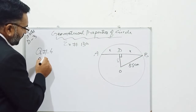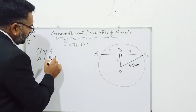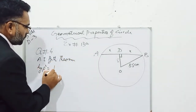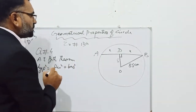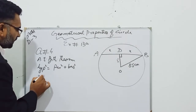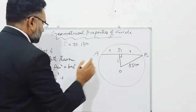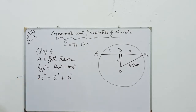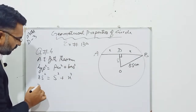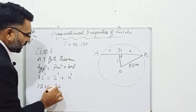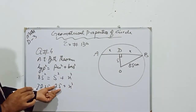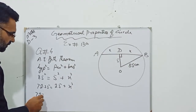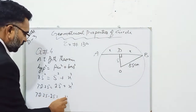According to Pythagoras theorem, hypotenuse square is equal to perpendicular square plus base square. Our hypotenuse is 8.5 squared, perpendicular is 5 squared, and base is x, so we will write x square. The square of 8.5 is 72.25 and the square of 5 is 25. Transferring 25 to the other side, it becomes minus, so we have 72.25 minus 25 equals x square.